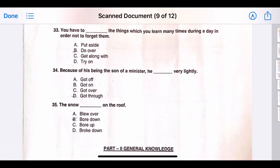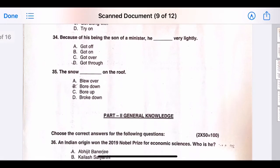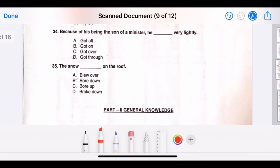Thirty-three, you have to blank the things which you learn many times during a day in order not to forget them. The correct answer is option B, do over. Thirty-four, because of his being the son of a minister, he blank very lightly. The correct answer is option A, got off.